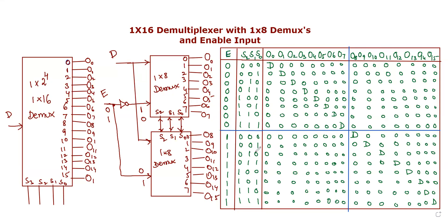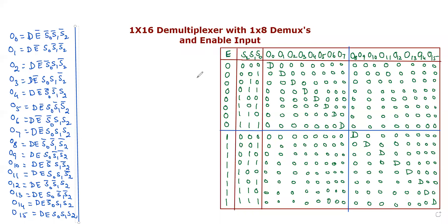We have to find the Boolean functions. Boolean functions are output variables. Output variables are O0 through O15. D is the function of the corresponding input. The Boolean expression for O0: its value is D when E is 0 and S0, S1, S2 are 0, 0, 0. So O0 = D · E' · S0' · S1' · S2'.